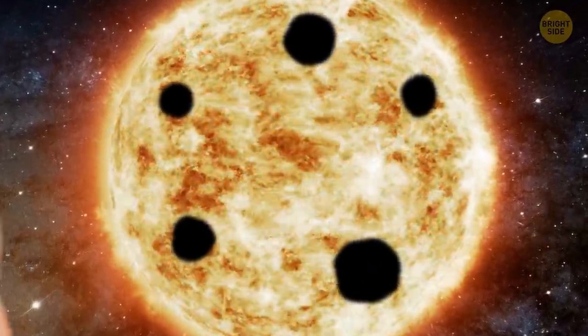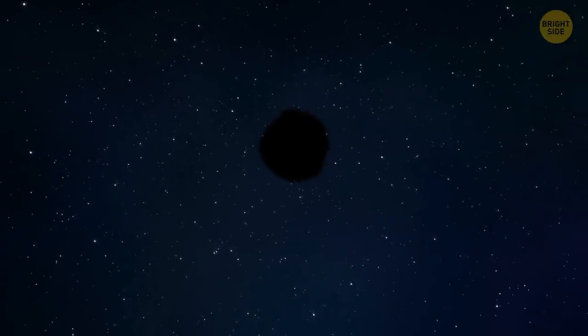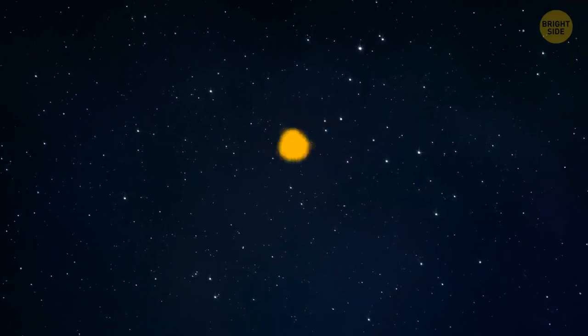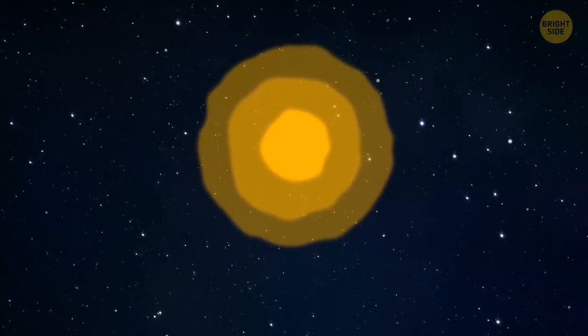That contrast makes them appear almost black. If we could take a sunspot apart from the Sun and place it somewhere in the night sky, it would be different, as bright as the Moon when we see it from the Earth.